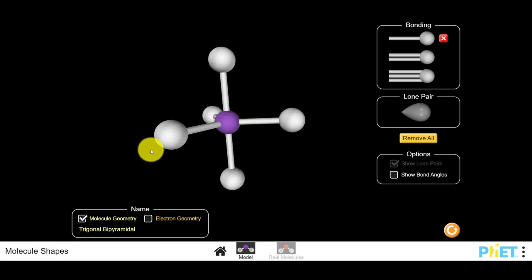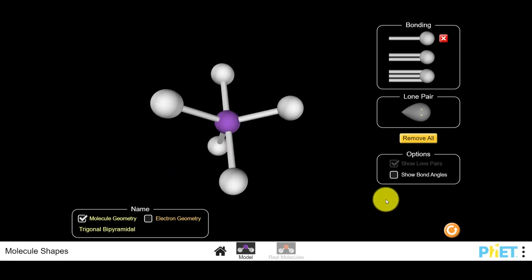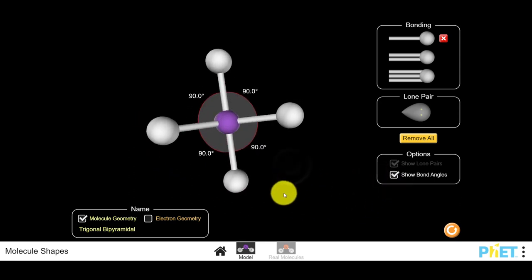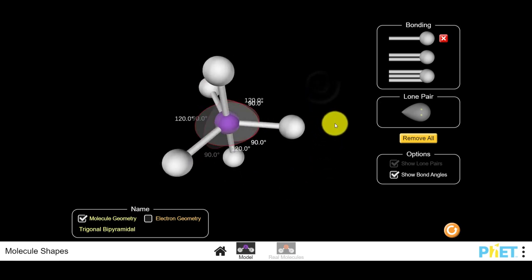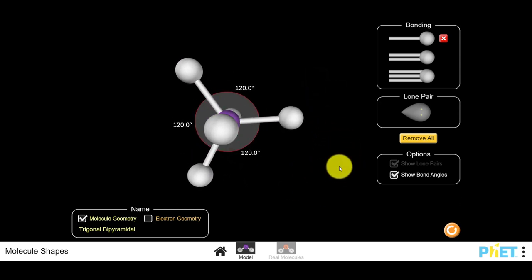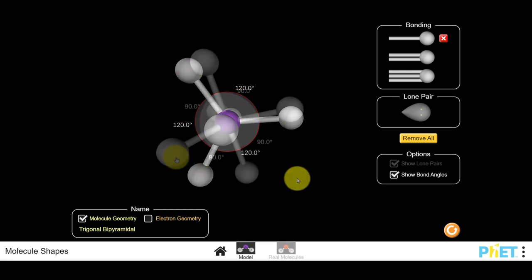Now the trigonal bipyramid is interesting because I can show the bond angles, and you actually have several bond angles. You have a 90 degree bond angle from the top of the shape to the side. But then if you spin it like this, you have 120 degree bond angles around the middle.